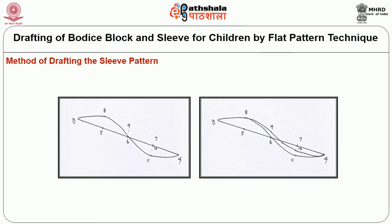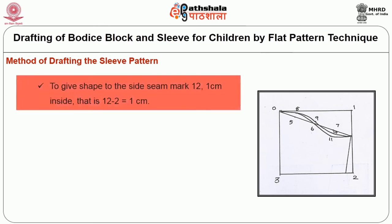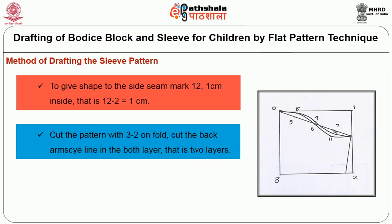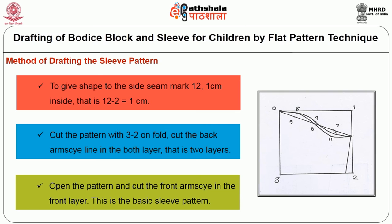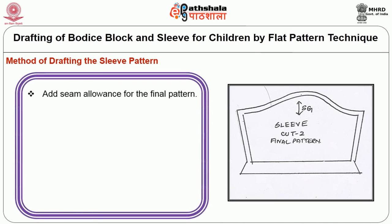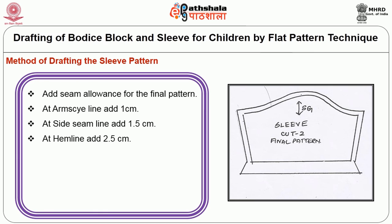Connect 0, 8, 6, 11 and 4 — this is the front armscye line. Connect 0, 8, 9, 10 and 4 — this is the back armscye line. To give shape to the side seam, mark point 12 at 1 cm inside — that is, 12 to 2 is 1 cm. Cut the pattern with 3 to 2 on fold, and cut the back armscye line through both layers. Open the pattern and cut the front armscye line in the front layer alone. This is the basic sleeve pattern. Add seam allowance for the final pattern: at the armscye line add 1 cm, at the side seam add 1.5 cm, and at the hem line add 2.5 cm. Cut the hem line first by keeping line 3 to 2 folded up, so the hem follows the slant of the side seam while stitching.